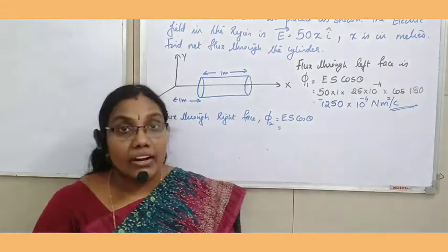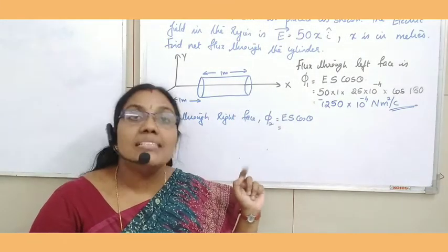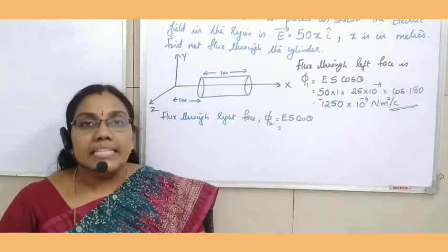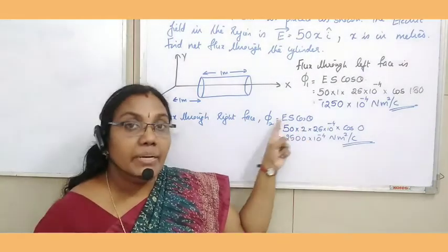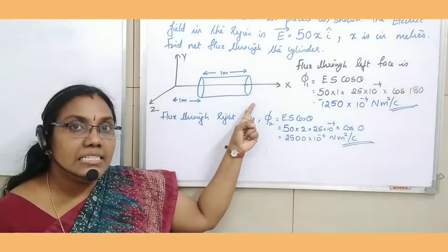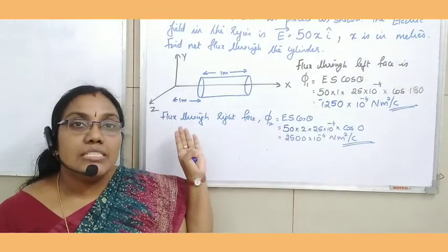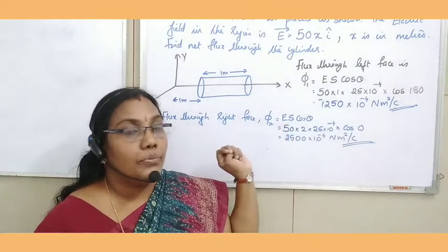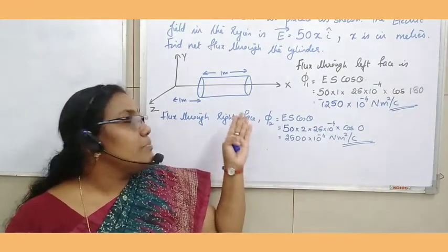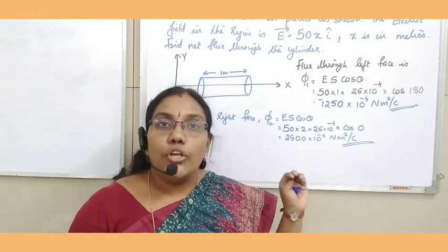Electric flux through the right face: same formula ES cos θ. In the right face, electric field and area vector are along the same direction, so theta = 0°. The right face is at x = 2 m from the origin, so E = 50 × 2. Area = 25 × 10⁻⁴ m². After simplification, we get 2500 × 10⁻⁴ N·m²/C.